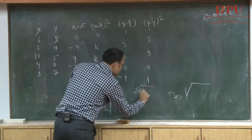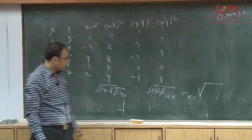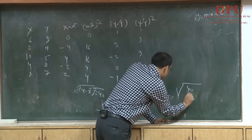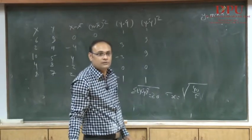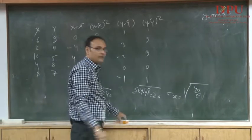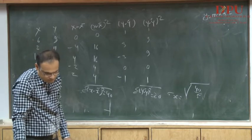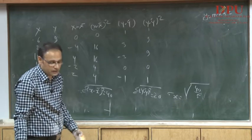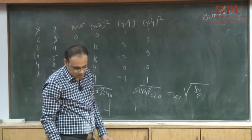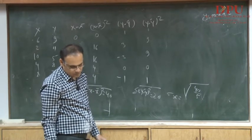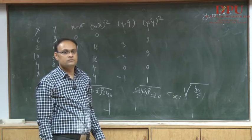The summation of (x - x̄)² equals 0+16+16+4+4 = 40. Similarly, the summation of (y - ȳ)² equals 1+9+9+0+1 = 20. So sigma x equals √(40/5) = √8 = 2√2 ≈ 2.828, and sigma y equals √(20/5) = √4 = 2.